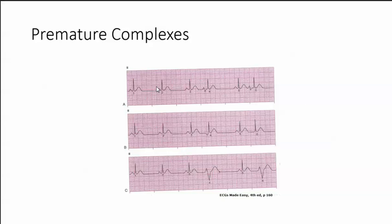Let's look at the first one. A normal sinus, normal sinus, normal sinus. Well, this one doesn't look normal — this looks normal but this one doesn't. If you take your calipers, the next beat should be right here, and on this one the beat after here should be right there. So you have a premature beat. Now look at the P wave here — it's definitely a P wave but it looks different. So you have a P wave that looks different with a normal QRS. This is a premature atrial complex.